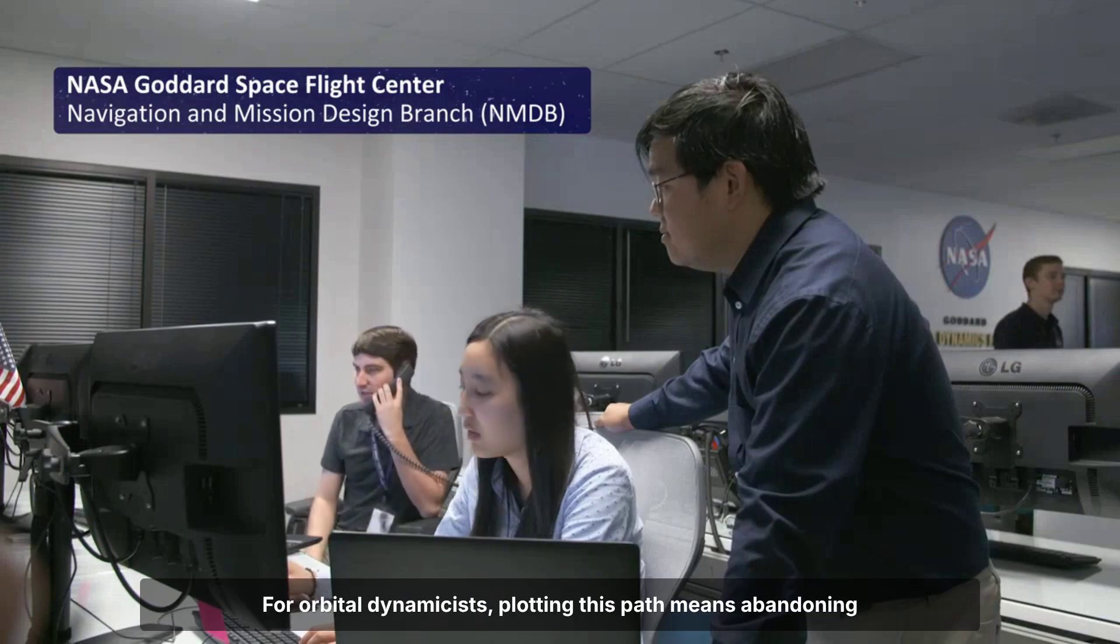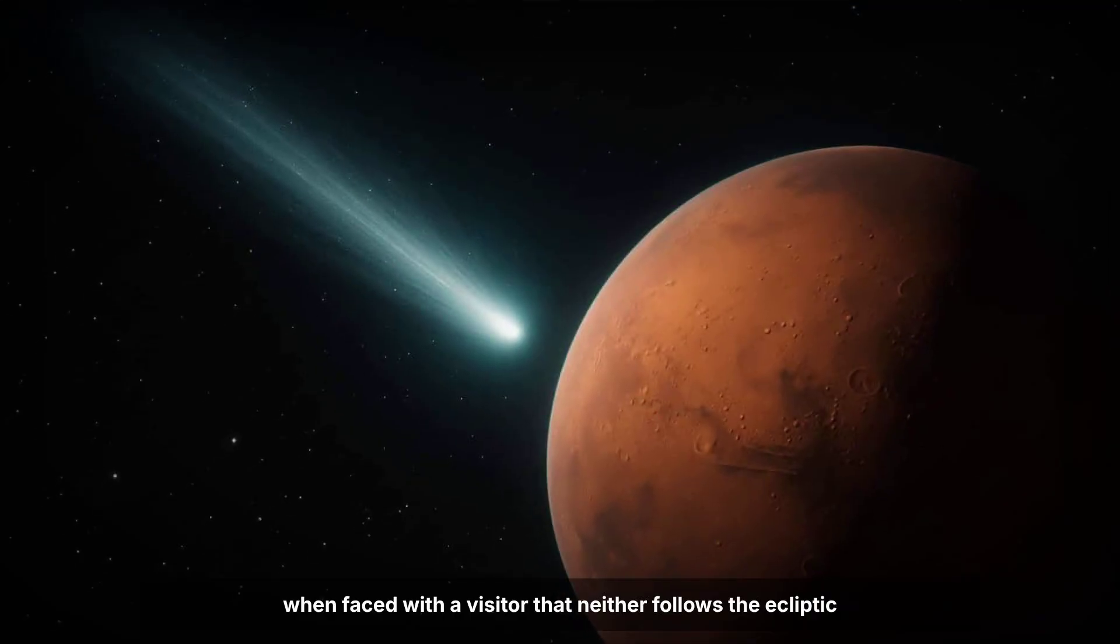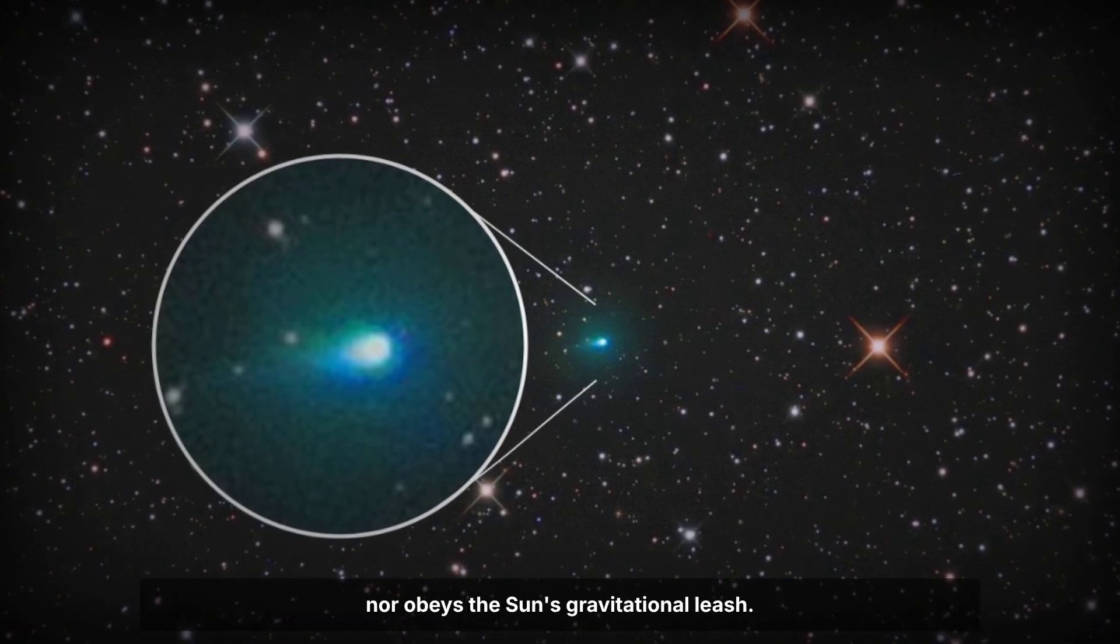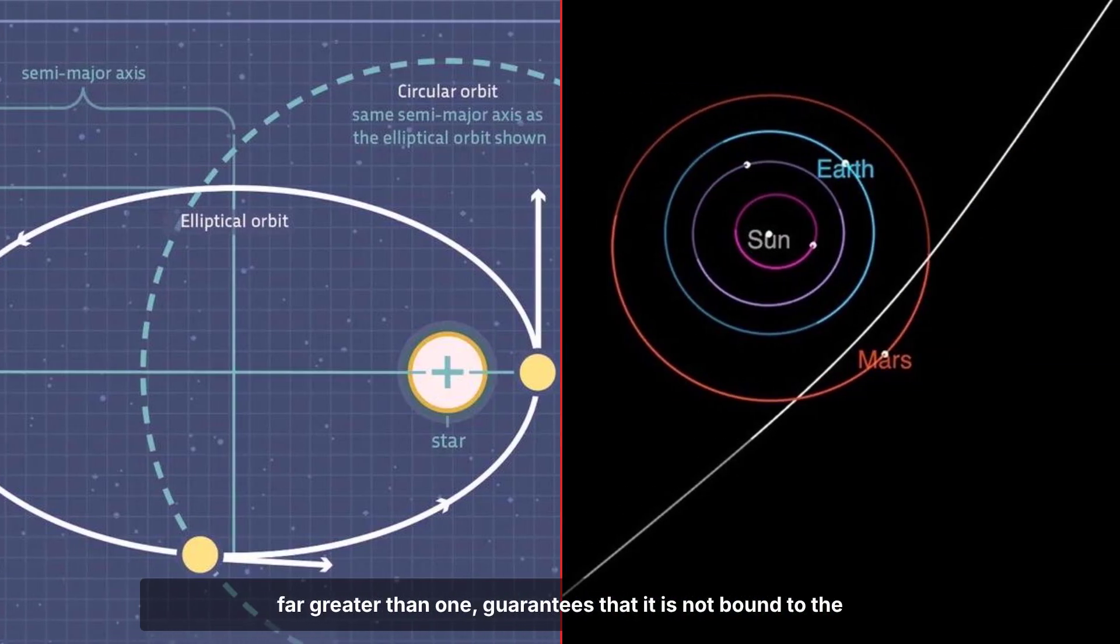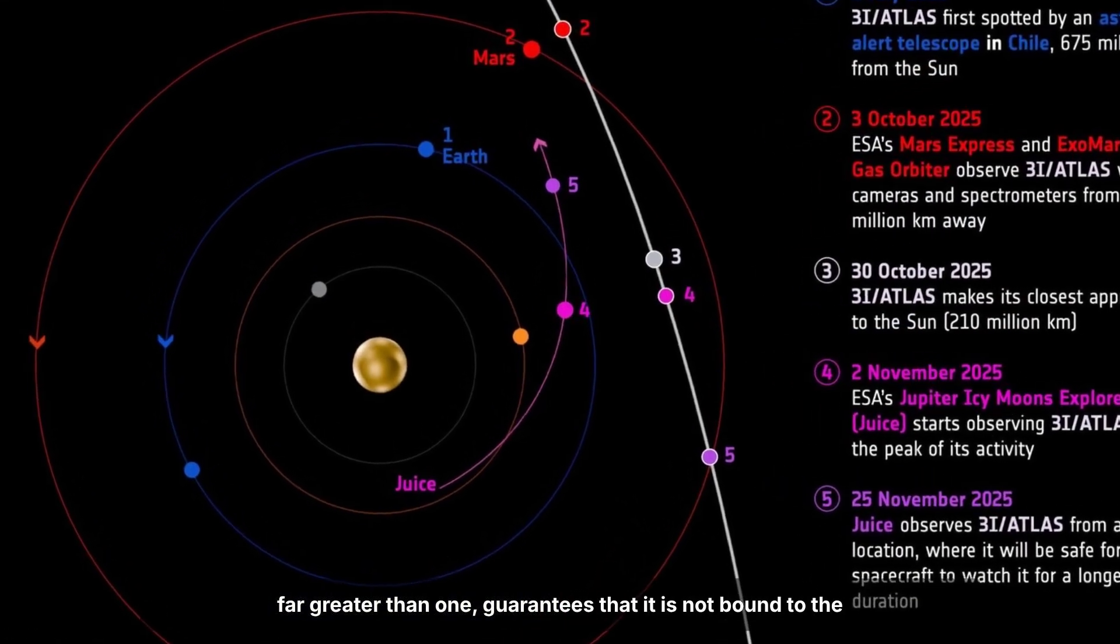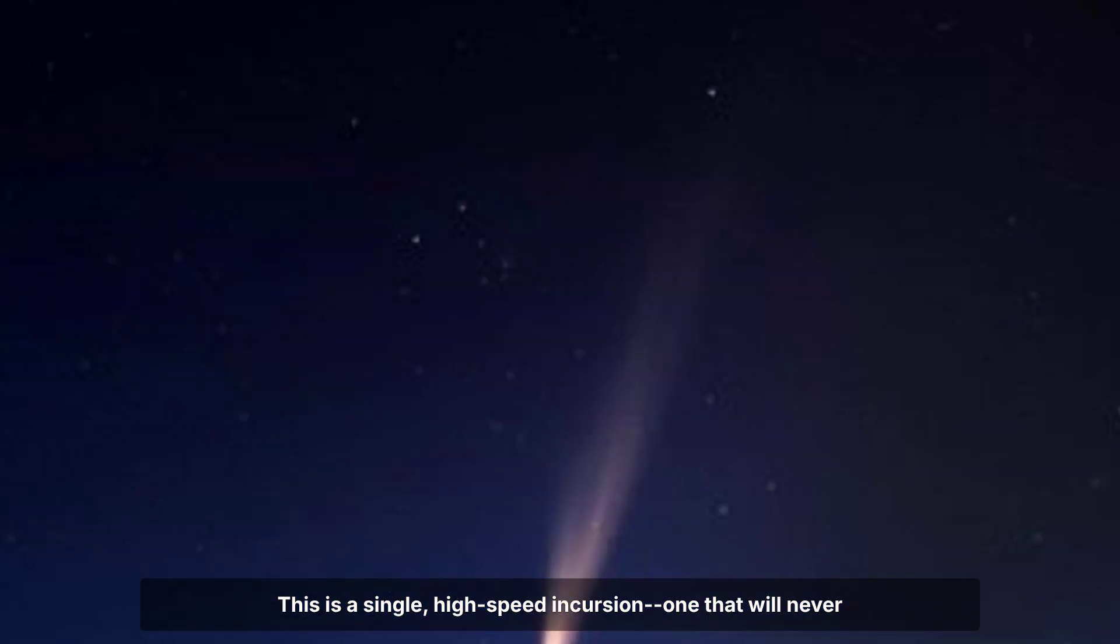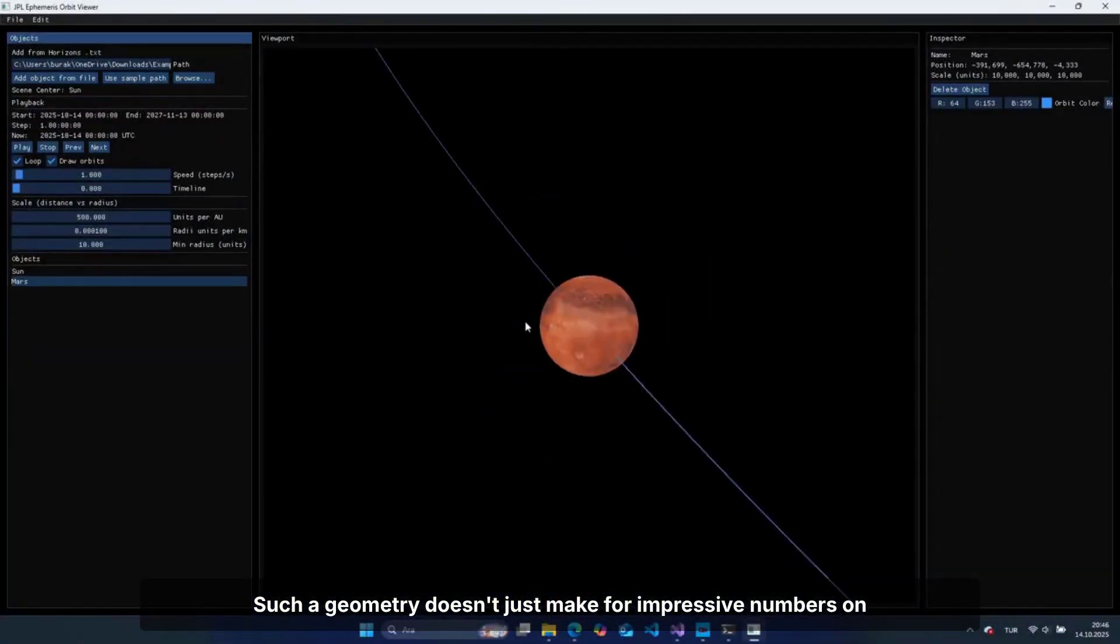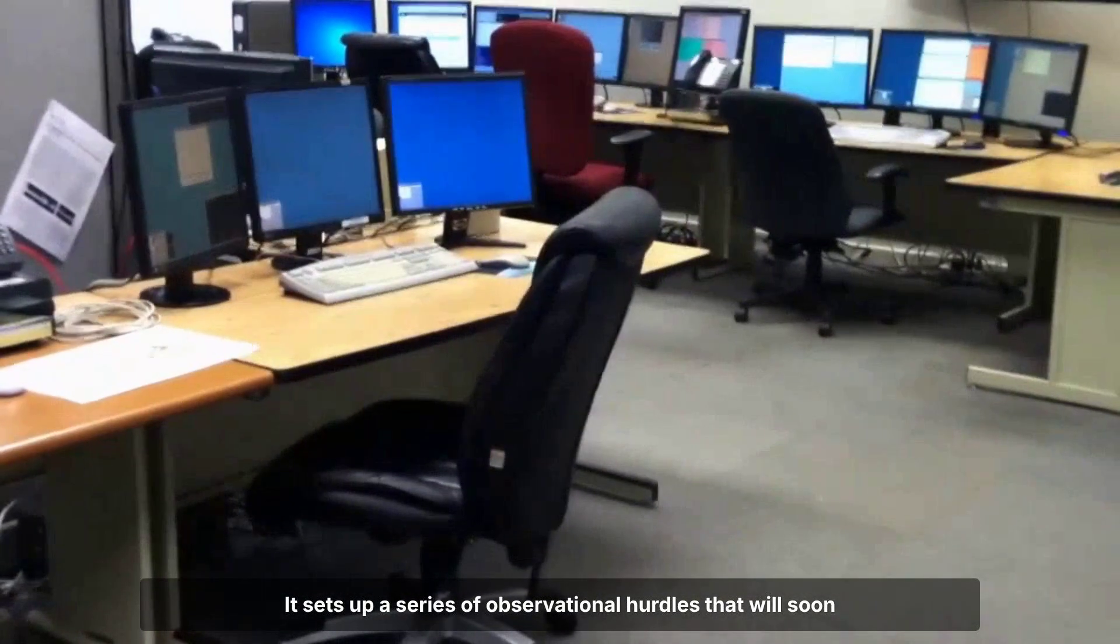For orbital dynamicists, plotting this path means abandoning the usual assumptions. The standard models that predict comet positions break down when faced with a visitor that neither follows the ecliptic nor obeys the sun's gravitational leash. The hyperbolic arc of Atlas's journey, with an eccentricity far greater than one, guarantees that it is not bound to the sun. There will be no second pass, no slow looping return. This is a single, high-speed incursion, one that will never repeat.